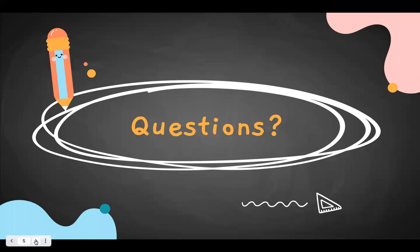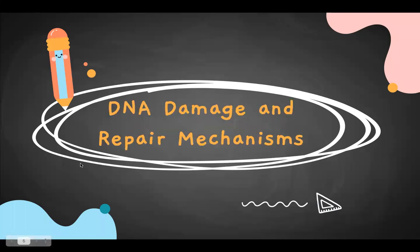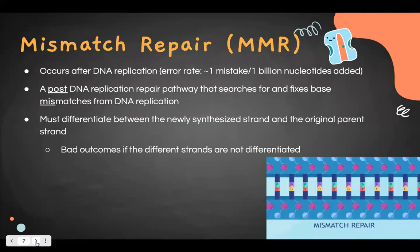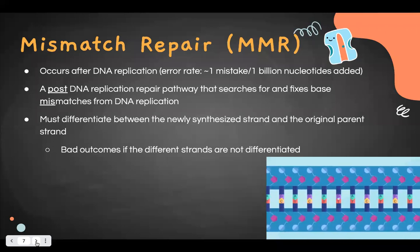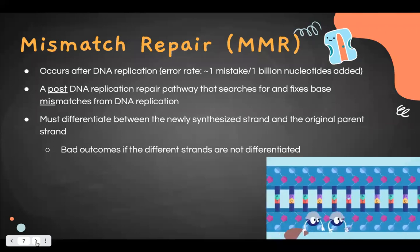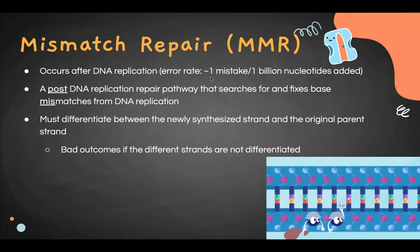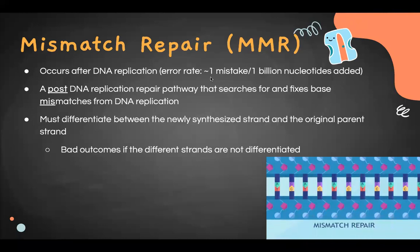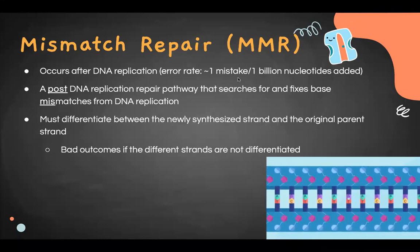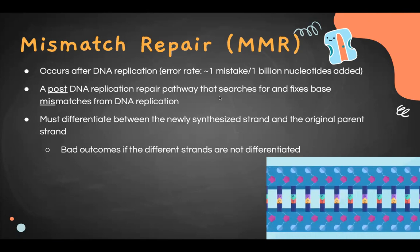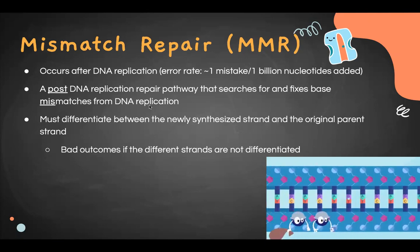The next section is DNA damage and repair mechanisms. Mismatch repair, or MMR, comes right after replication finishes. It is a post-DNA-replication repair pathway that searches for and fixes base mismatches from DNA replication. The error rate improves from one mistake per 10 million nucleotides to one mistake per 1 billion nucleotides.